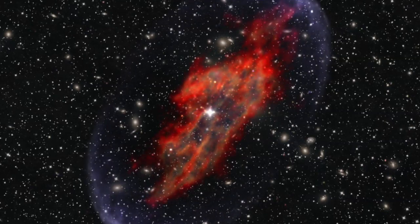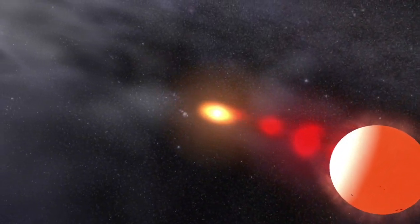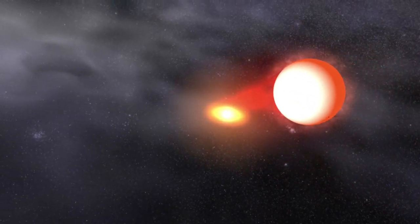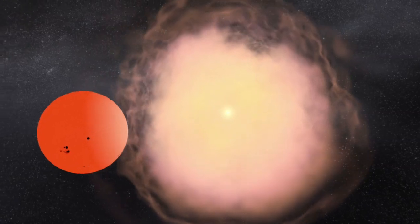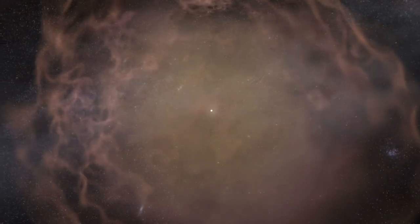Type Ia supernovas are nature's most productive foundries. An old white dwarf star pulls gas off its giant neighbor. The dwarf gains mass until it becomes unstable and blows itself to bits. The explosion creates vast amounts of heavy elements and blasts them into space.